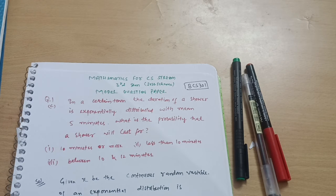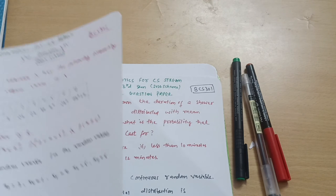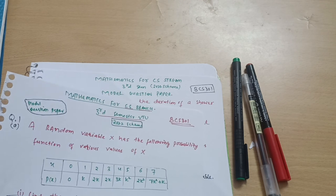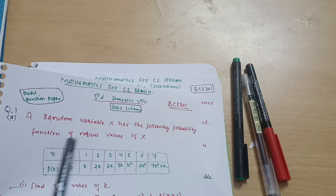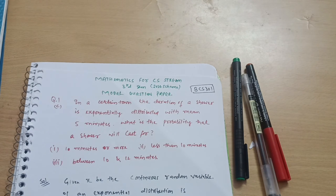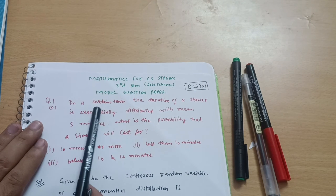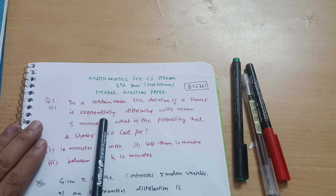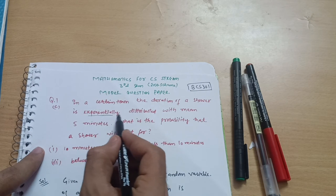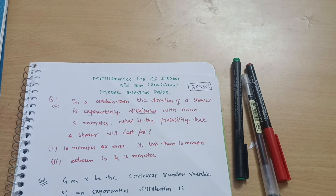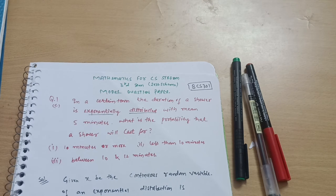Hello everyone, welcome back to my channel. In the previous lecture we discussed the model question paper of mathematics for CAC branch students — question one was about a random variable. In this video we will discuss the exponential distribution. In a certain town the duration of a shower is exponentially distributed. There are many distributions like binomial, Poisson's, and normal distribution, but this is an exponential distribution problem.